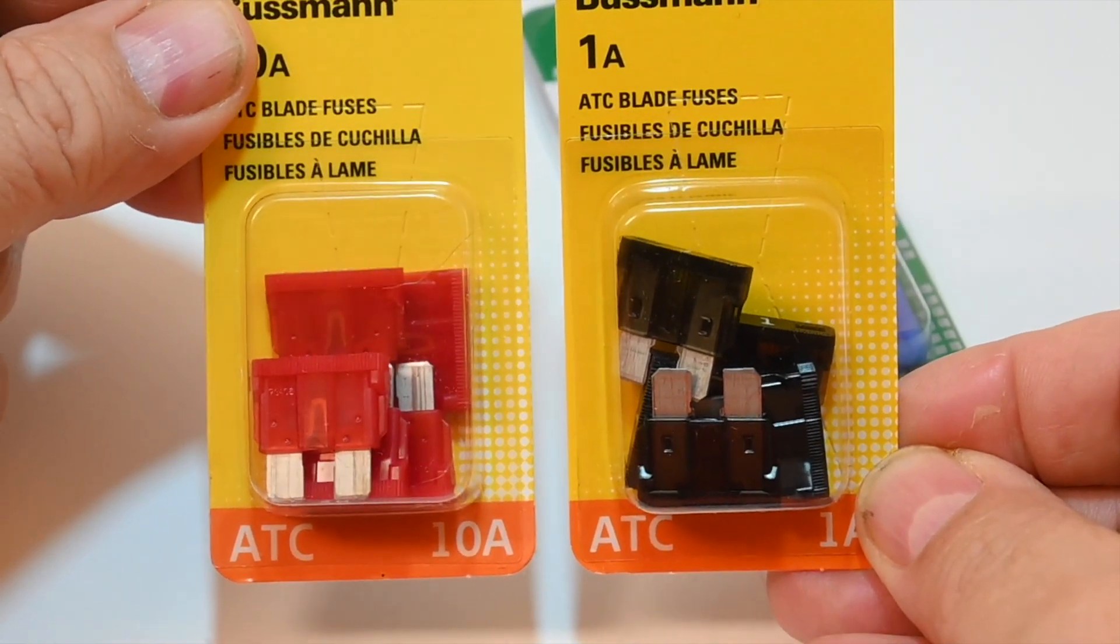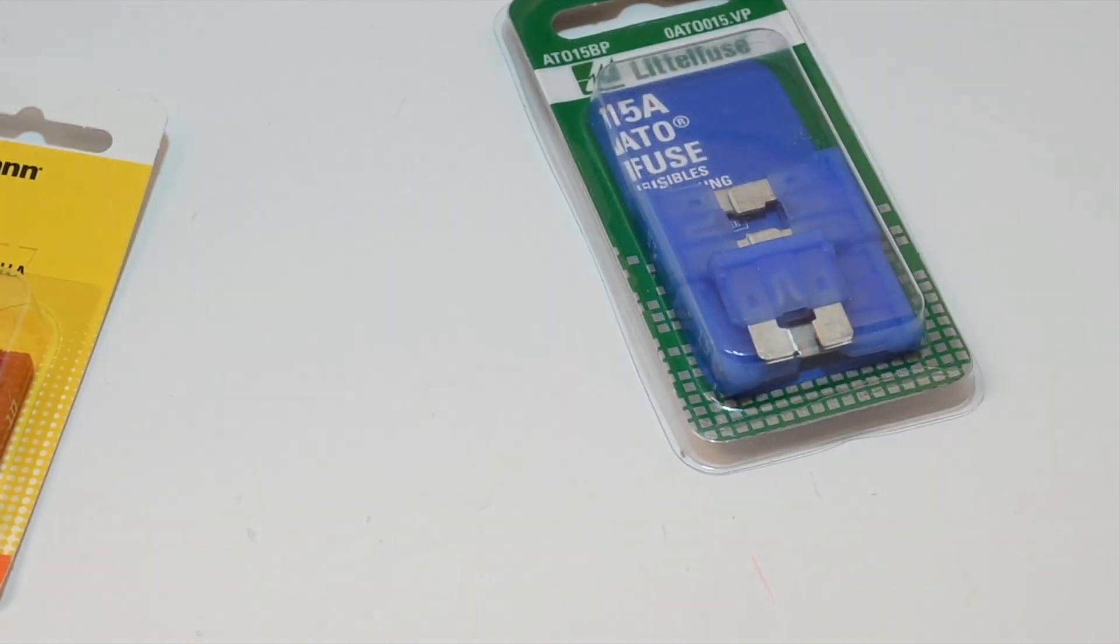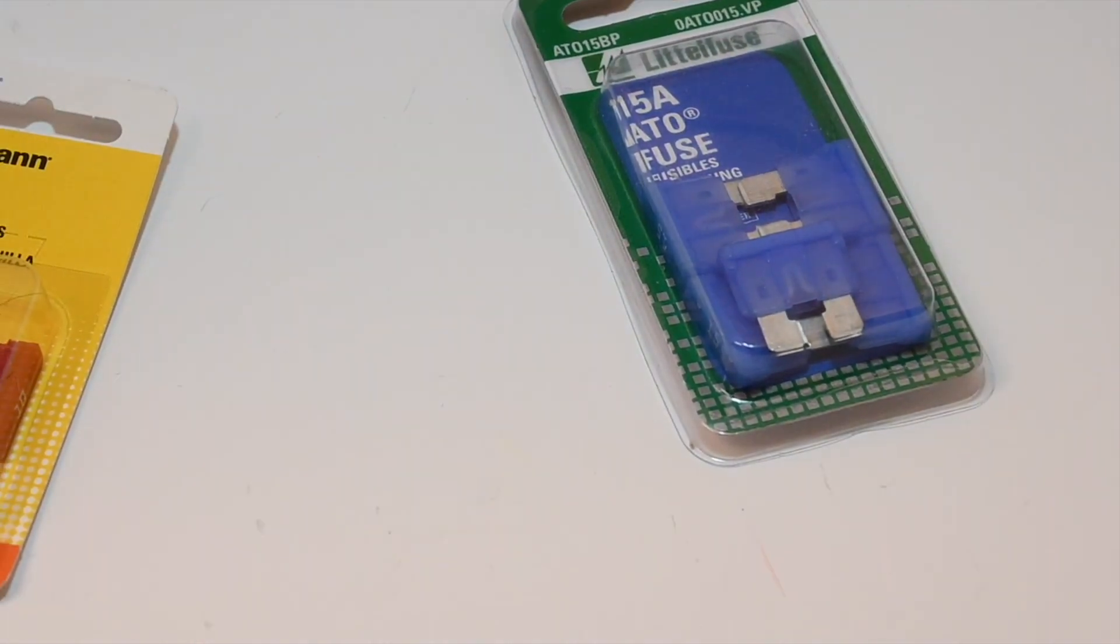So clearly ATC does not mean closed and ATO does not mean open. They're just manufacturer trademarks. So I'm not sure where the open and closed explanation originated but it does appear to be a myth. If it's on the internet it must be true, right?